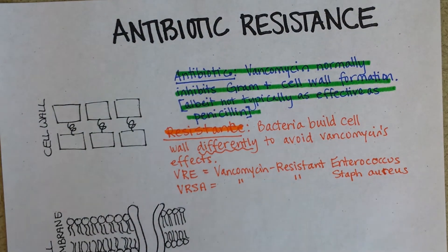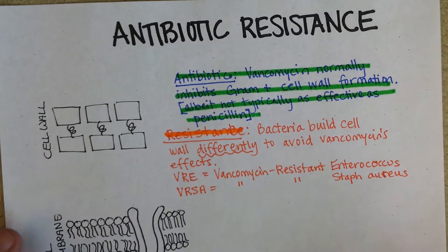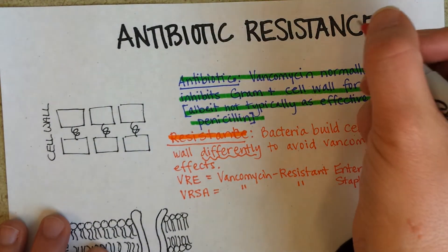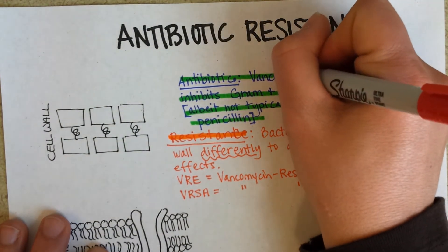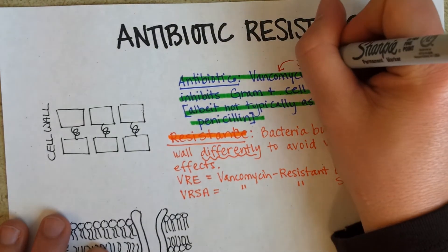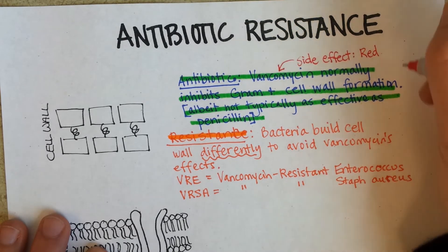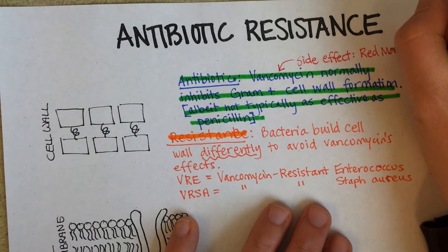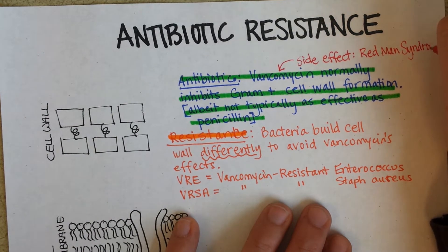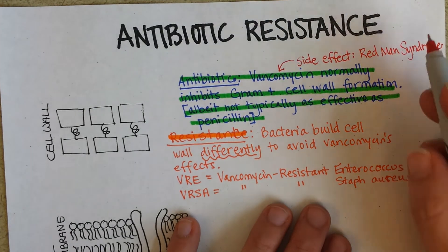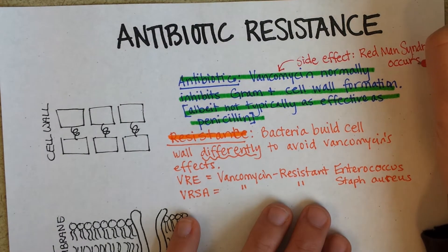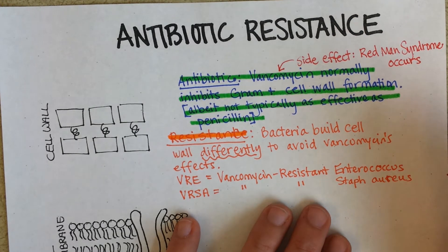Vancomycin not only doesn't work as well as penicillin would have if the bacteria weren't resistant — it's also far more toxic and causes a potentially scary side effect called red man syndrome. This side effect, red man syndrome, occurs when the vancomycin is infused too quickly into the IV.